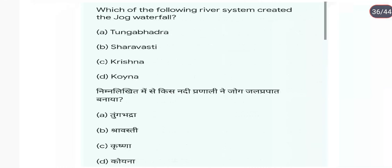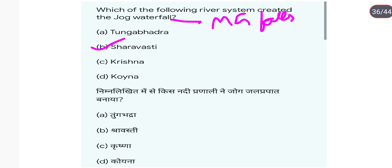Which river system created the Jog Falls? This is the Sharavati River. Jog Falls को Mahatma Gandhi Falls भी कहते हैं।